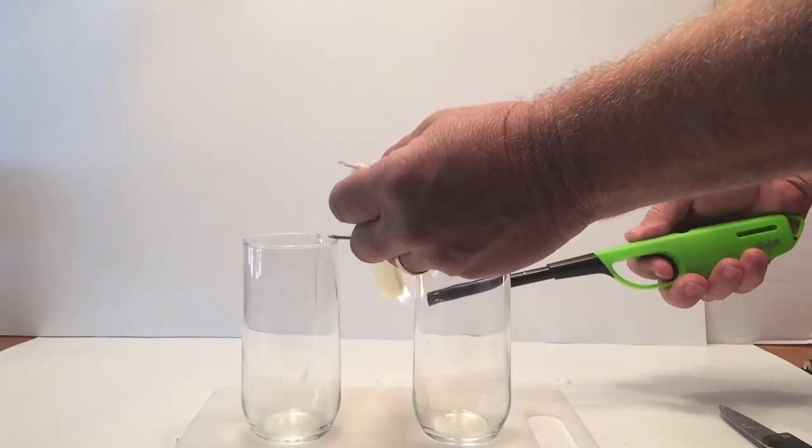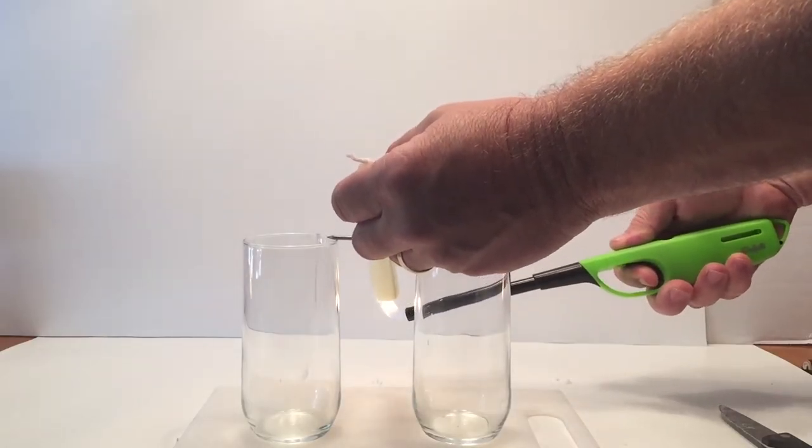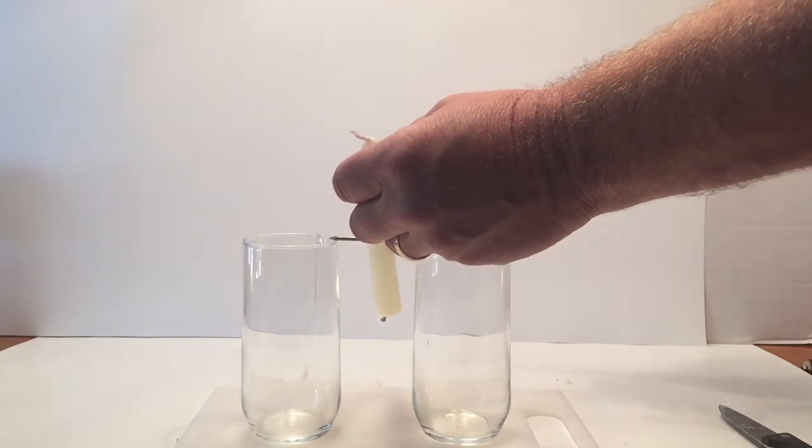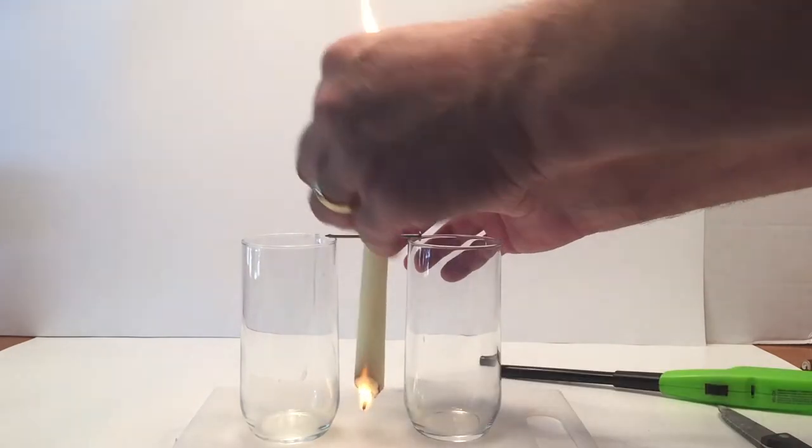Now with adult supervision, you're going to light one end of the candle and then you're going to light the other end of the candle and your experiment will be ready to go.